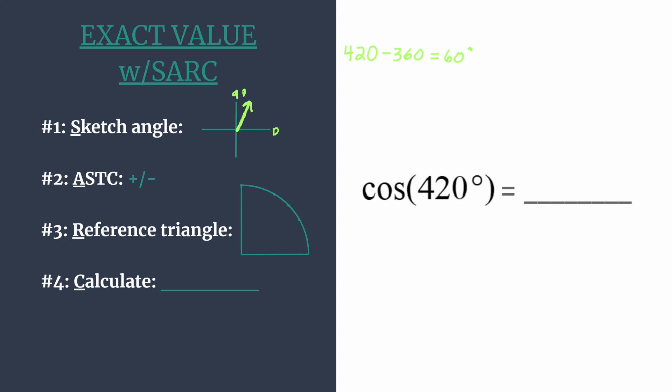Now we can go to step two, thinking ASTC. This just tells us which trig functions are positive in each quadrant. Let's write that around. They're all positive in one, sine and cosecant in two, tangent and cotangent in three, and cosine and secant in four.